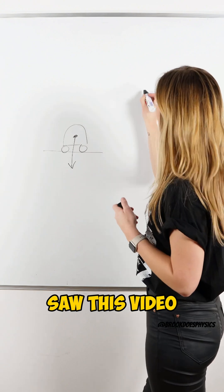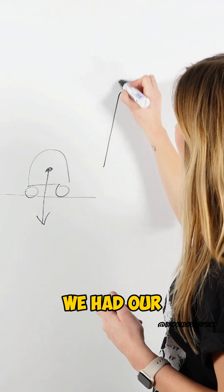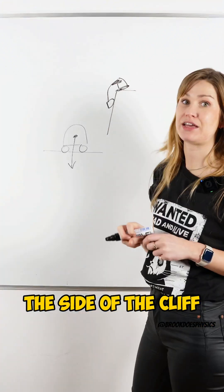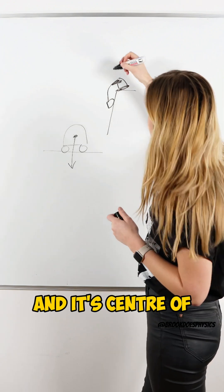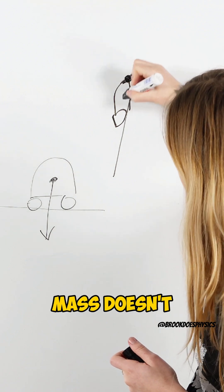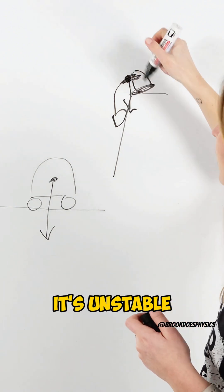However, in this video what we had was a digger that looked like it was coming over the side of the cliff at the edge, and its center of mass is slightly shifted. Because that center of mass doesn't act through the base, that's why it's unstable and that digger should have tipped over.